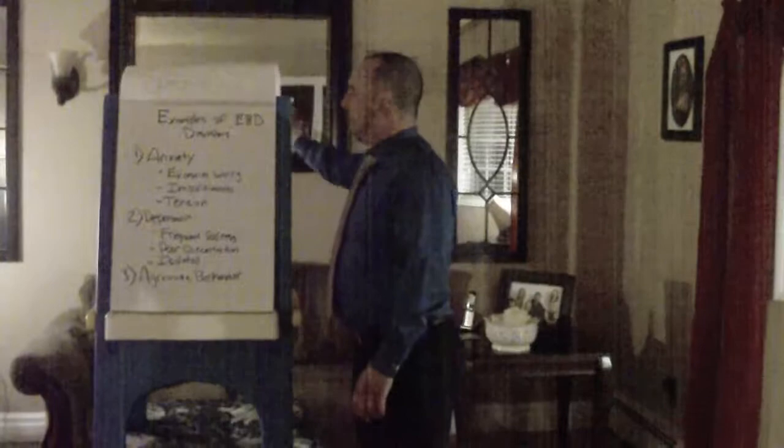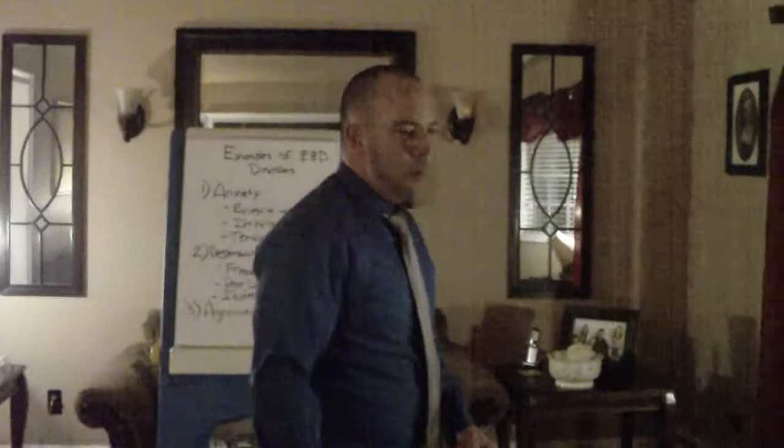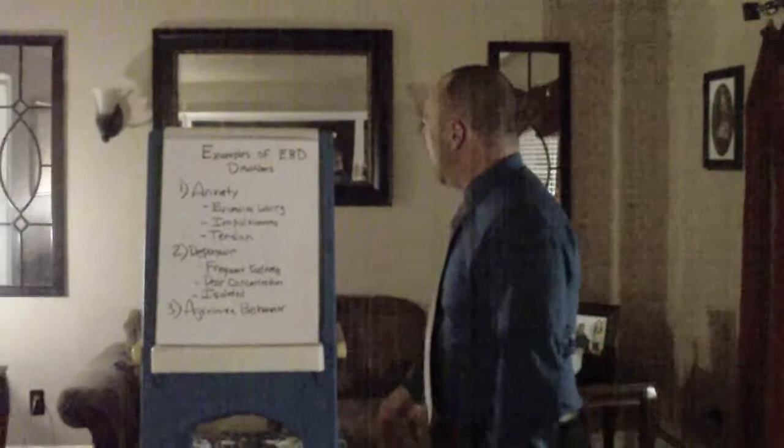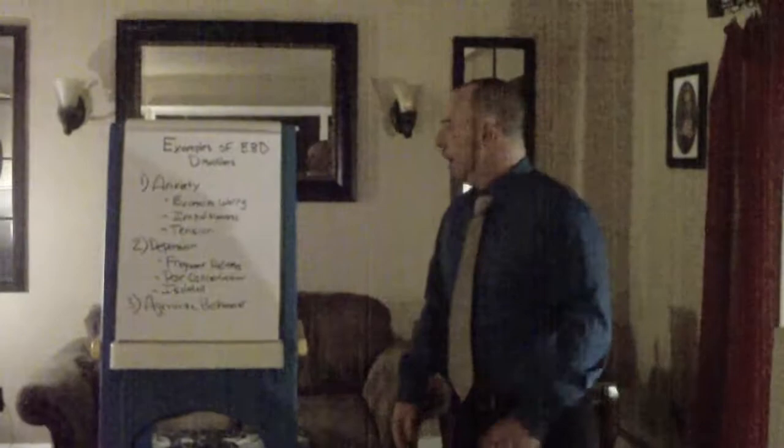Some examples of EBD disorders are anxiety, which is excessive worrying. Characteristics include fidgeting, pacing, and being very nervous about daily activities. Impulsiveness is when the student will call out answers or inappropriate terms and vulgarities, with a lot of tension and nervousness.